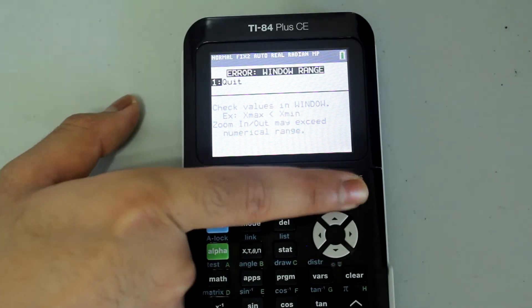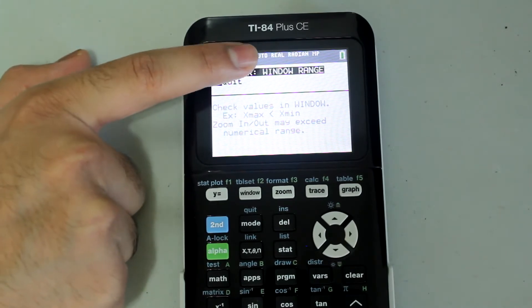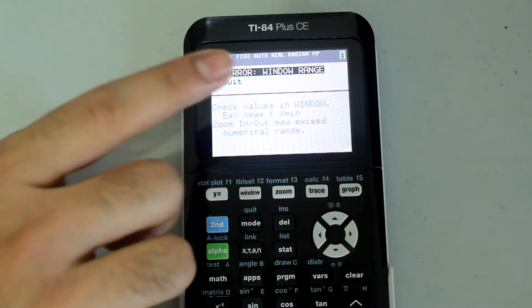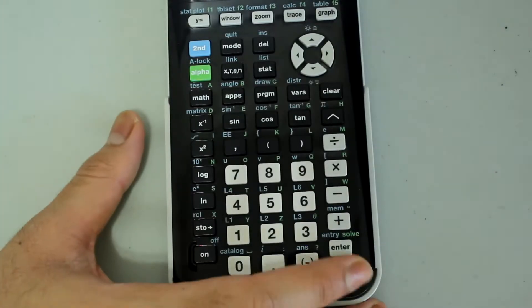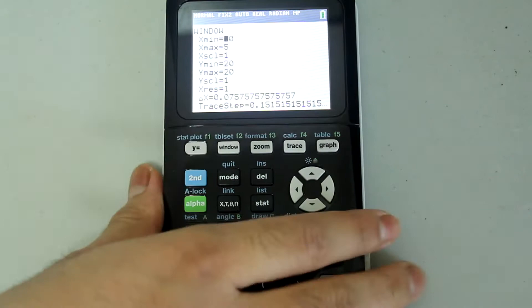If I press graph, however, I get an error, noting that something is wrong with the window. So we're going to exit this error message by pressing enter, and actually go to the window to see what's wrong.